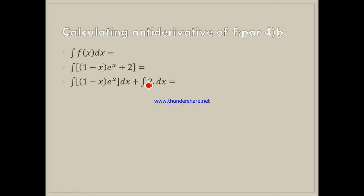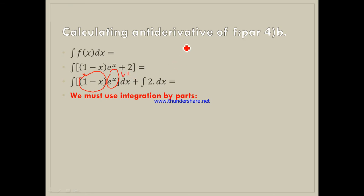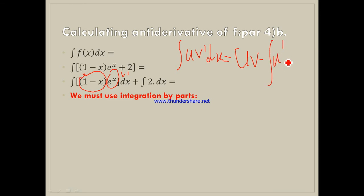The integral of 2 dx equals 2x + C. For the other integral, we must use integration by parts because we have a polynomial times an exponential function. We take u = (1 − x) and v′ = eˣ. Then u′ = −1, and the antiderivative v = eˣ.